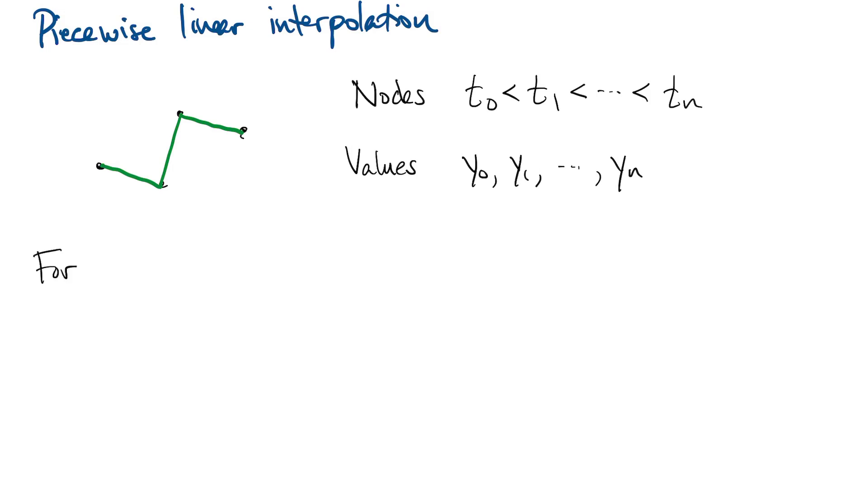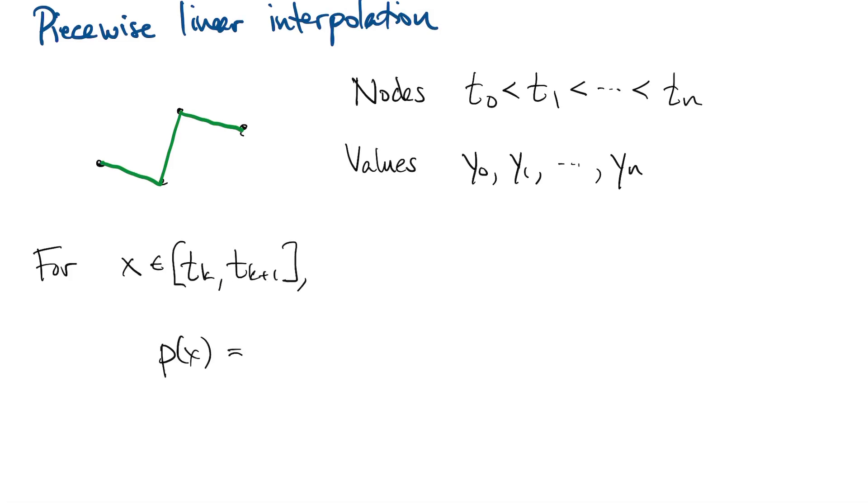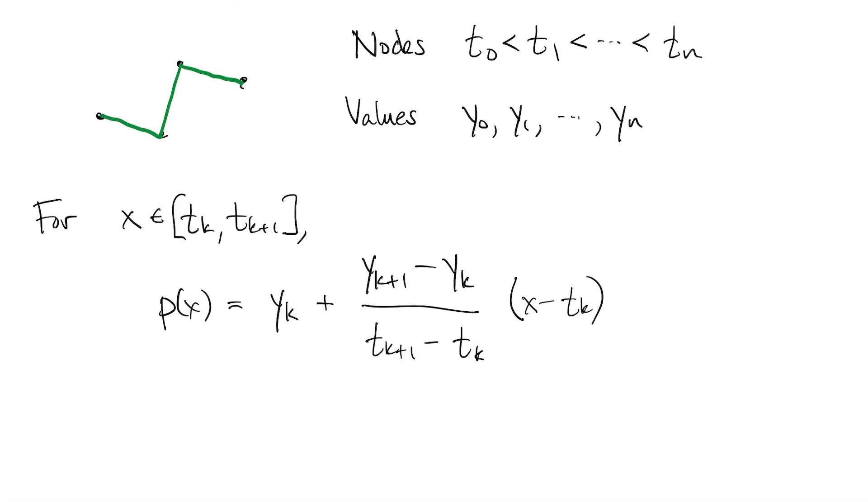By definition, inside the interval from Tk to Tk plus 1, the interpolant is linear, so it's determined entirely by the two endpoints of that interval, and it's easy to write out a formula if we want one. Now the formula itself for P changes depending on which interval you're in, that's what we mean by a piecewise definition.